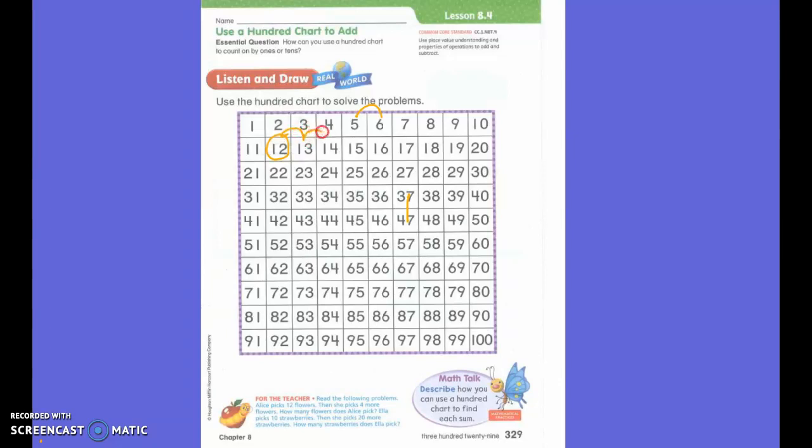1, 2, 3, 4. You're right. We stop at 16. How did the 100s number chart help us count by 1s?